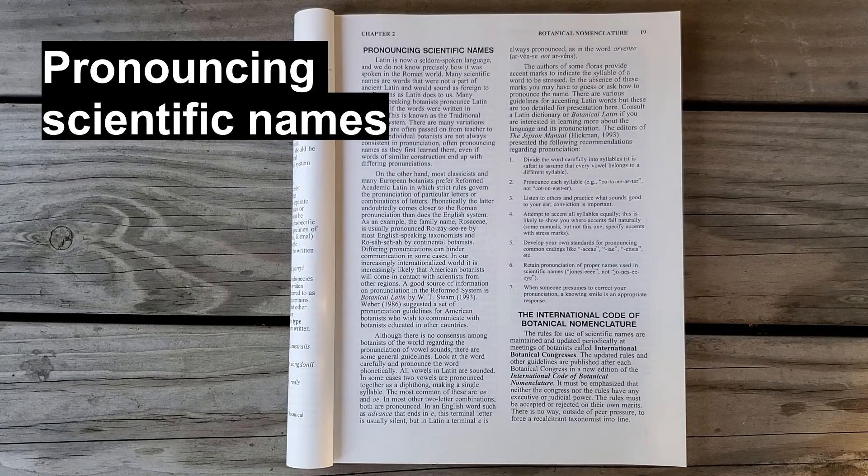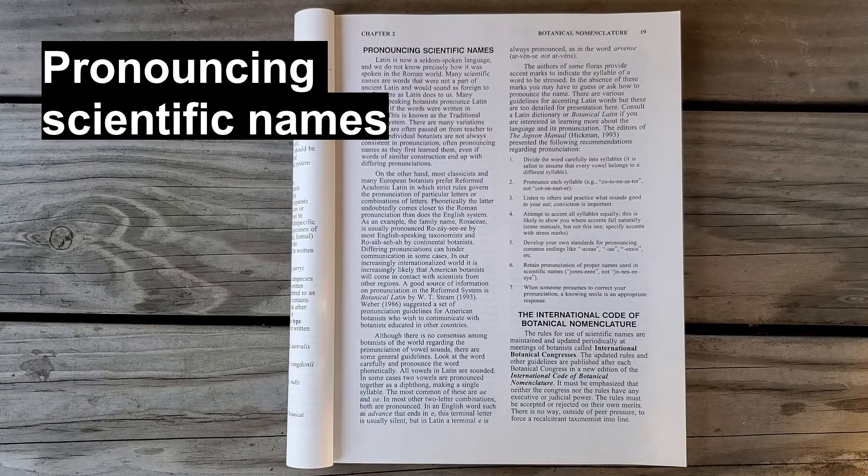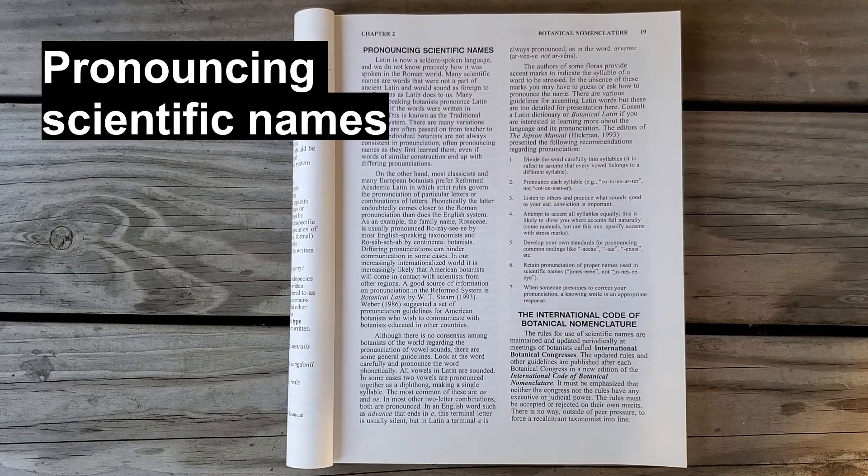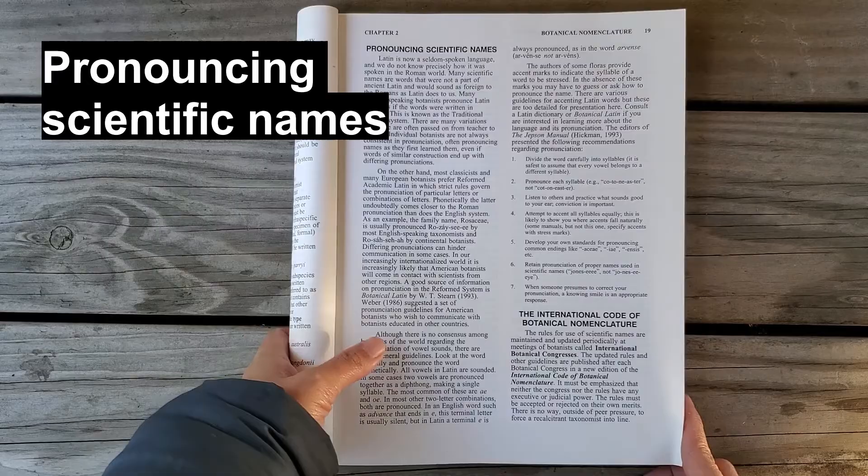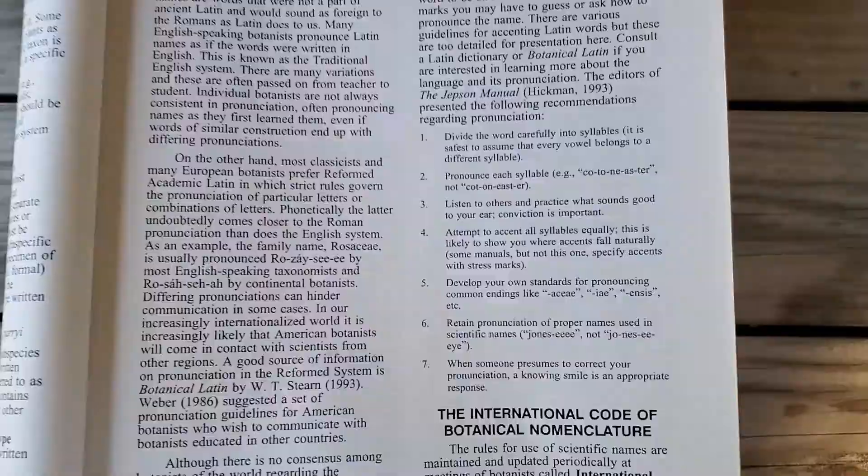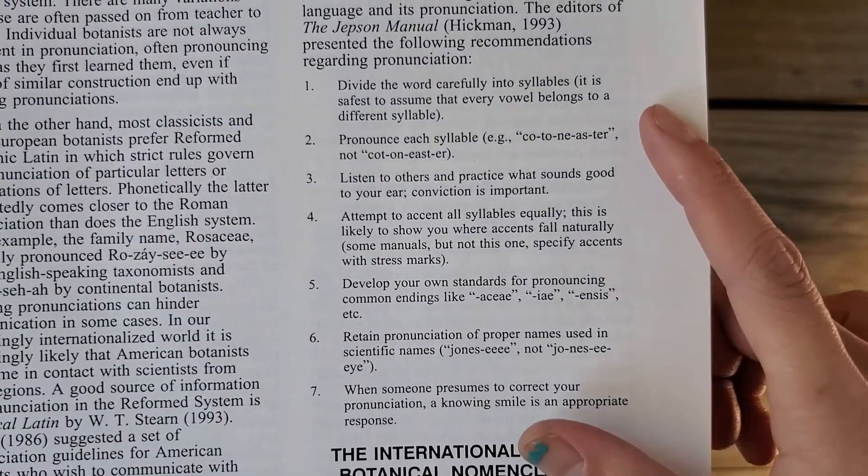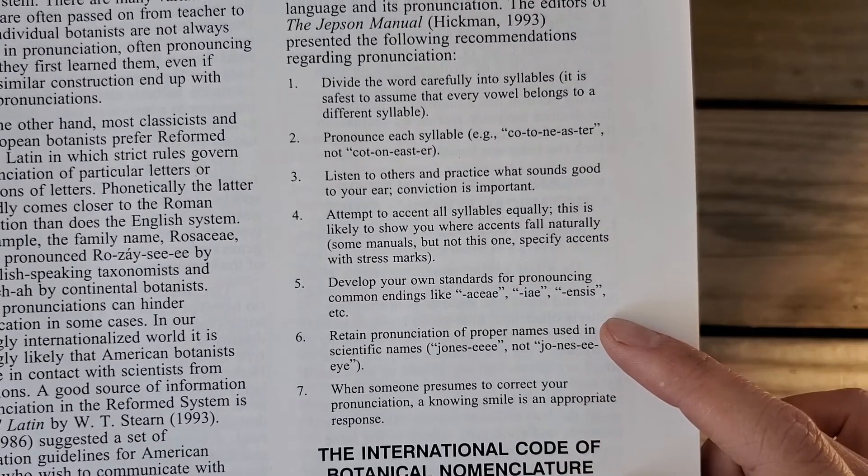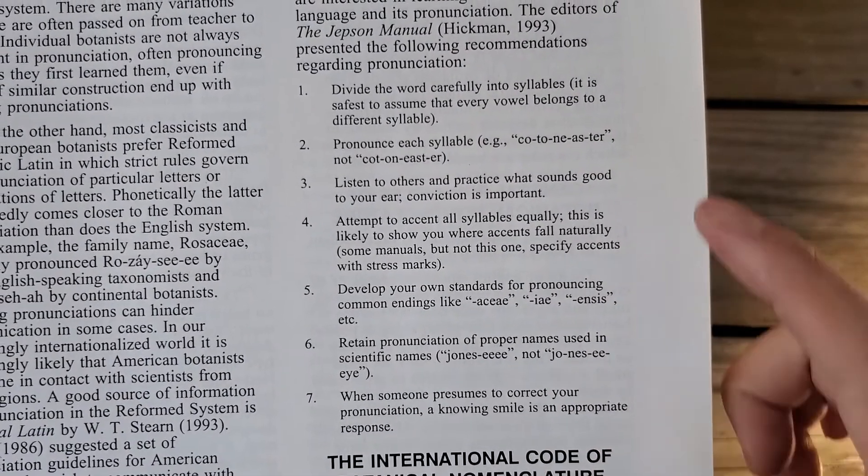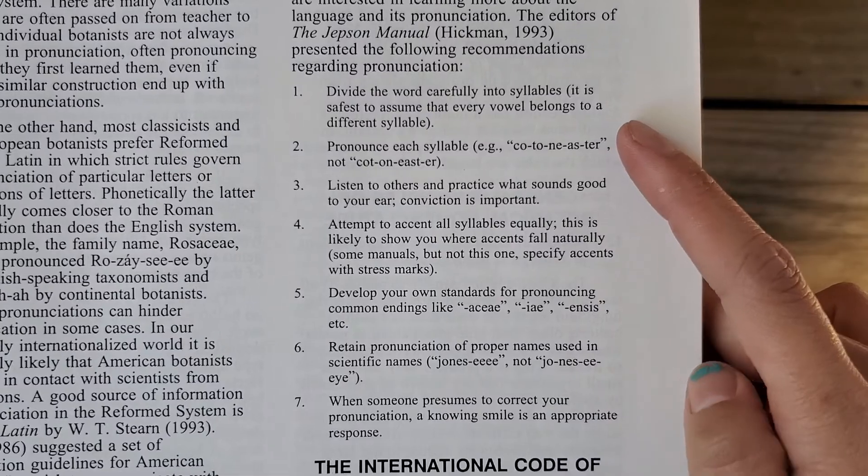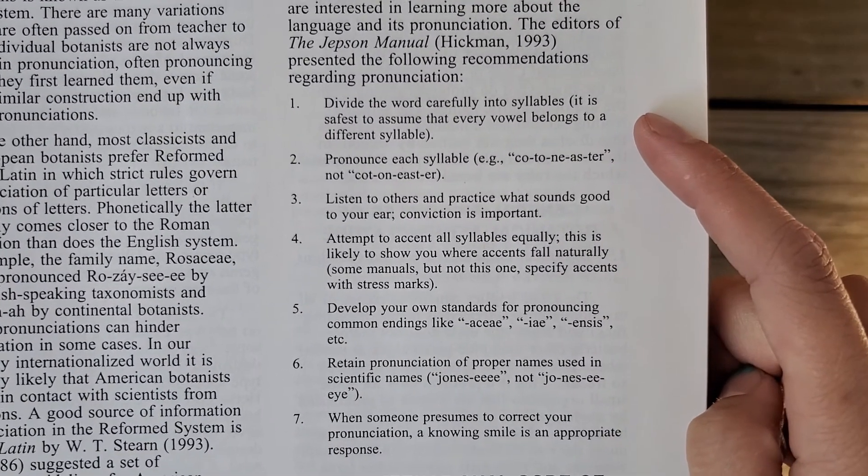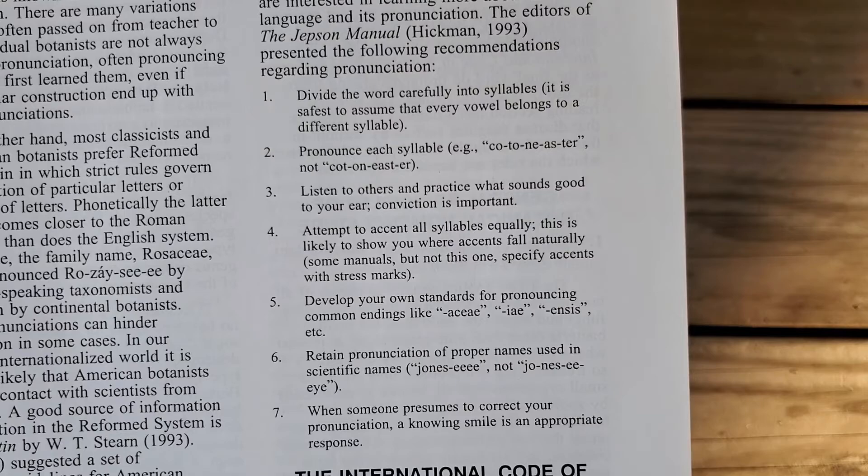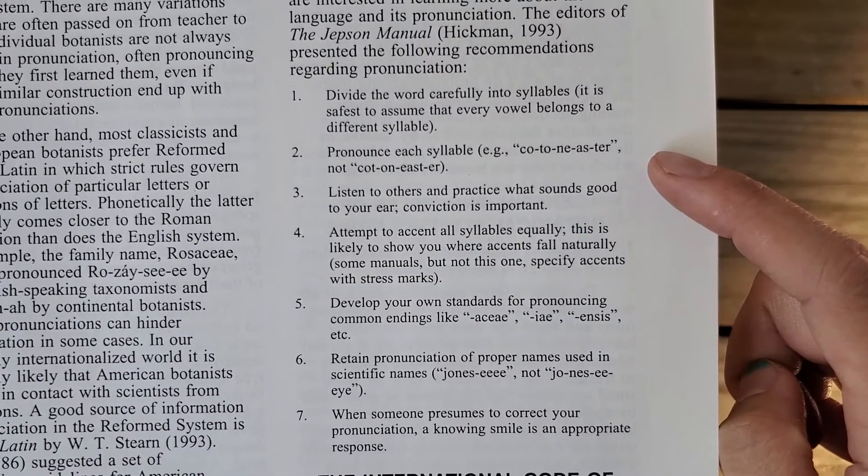A lot of people are confused as to how to pronounce these names. A lot of the words are based in Latin, but not all of them. So this textbook has a list of rules from the Jepson manual, and I think they're really useful. So number one, divide the word into syllables and assume that each vowel is its own syllable, then you pronounce every syllable.